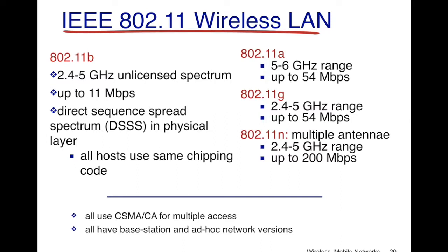For example, 802.11b only offered up to 11 megabits per second, whereas 802.11n, which used multiple antennas, provides up to 200 megabits per second. One thing that is common across all these different technologies is that they all use CSMA/CA for multiple access, and they all have base station and ad-hoc mode versions. We'll discuss CSMA/CA later in this video.